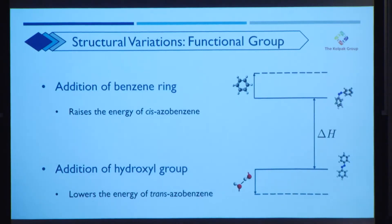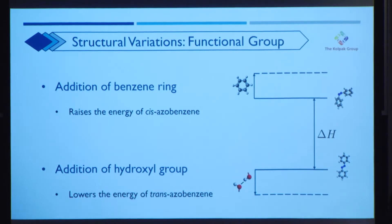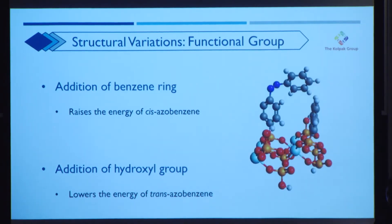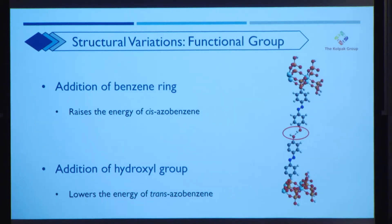The second type of structural variation was adding functional groups. We chose two: a benzene ring and a hydroxyl group, intended to increase delta H in opposite directions. The benzene ring was meant to raise the energy of cis-azobenzene, while the hydroxyl group was intended to lower the energy of trans-azobenzene. The benzene ring is a bulky side group that creates steric clash with the cis-azobenzene as it folds over, raising its energy. The hydroxyl groups were intended to attach at the tips of azobenzene molecules to induce hydrogen bonding, stabilizing the trans-azobenzene structure and increasing delta H that way.